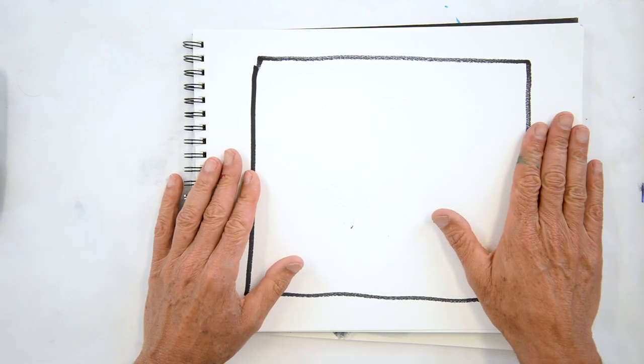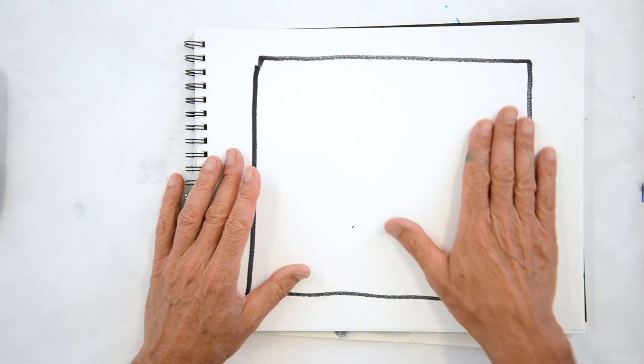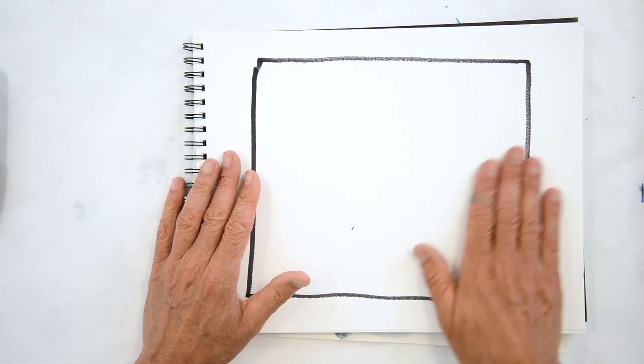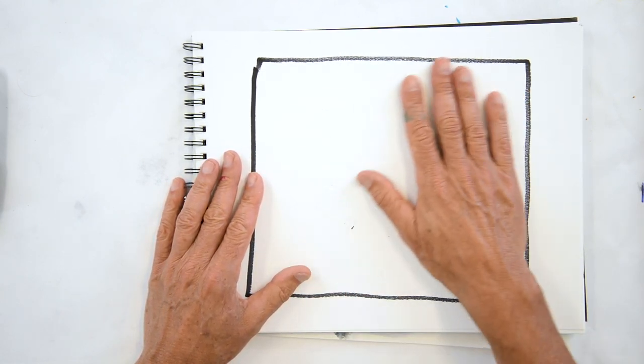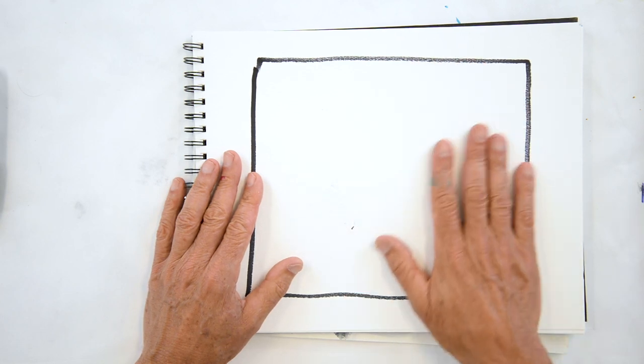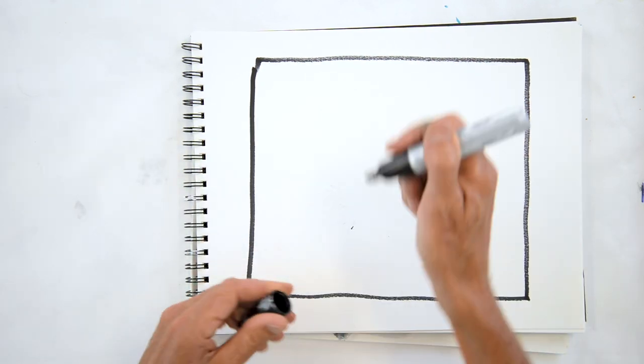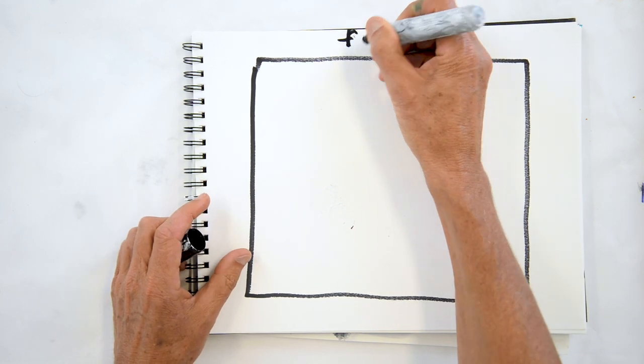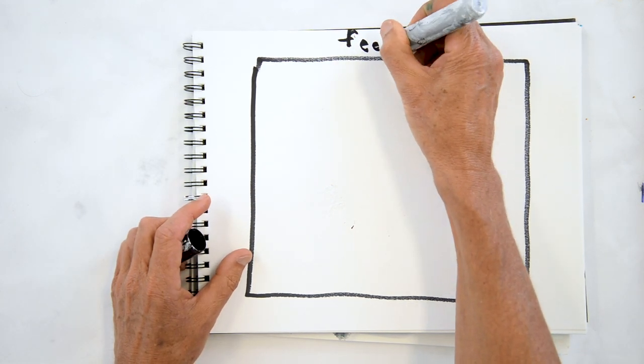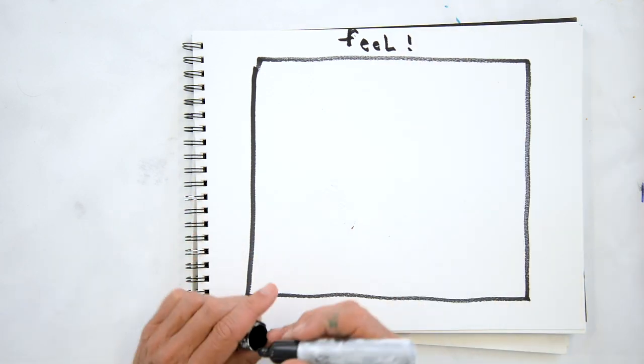Or before I start, I can think of how I might want this thing when I'm done, or even how I want it to feel in the beginning. And feeling, feel, I'll write it here just to emphasize it, is the operative word.